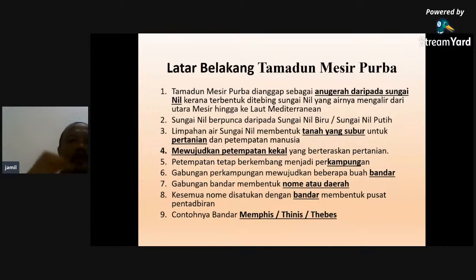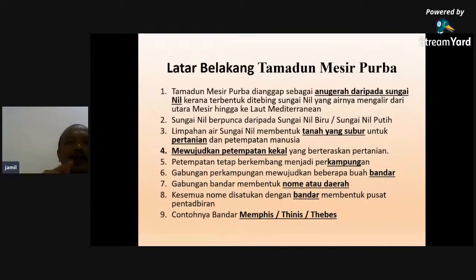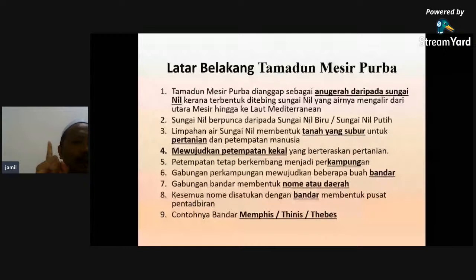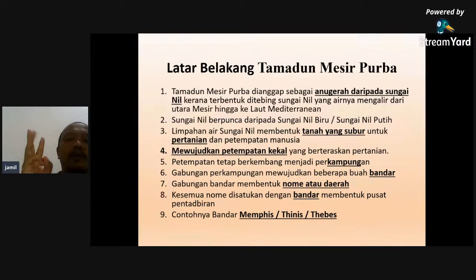Kalau soalan tanya nyatakan latar belakang tamadun Mesopotamia: jawapan pertama - terletak dekat sungai Nil, dekat sungai Nil mempunyai tanah yang subur, yang ketiga menjalankan aktiviti pertanian, dan yang keempat mewujudkan pertempatan kekal. Sama juga kalau ubah soalan - nyatakan latar belakang tamadun Huang Ho: yang pertama terletak dekat sungai Huang Ho, yang kedua mempunyai tanah yang subur, yang ketiga menjalankan pertanian, dan yang keempat mewujudkan pertempatan kekal. Begitu juga tamadun Indus: terletak dekat sungai Indus, ada tanah yang subur, boleh buat pertanian, dan mewujudkan pertempatan kekal.